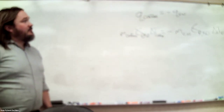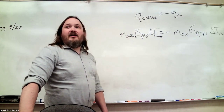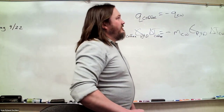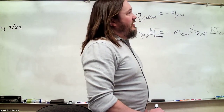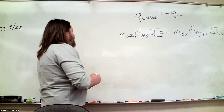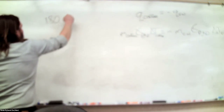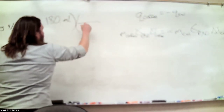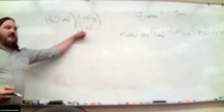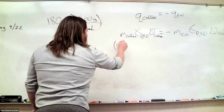We know really everything but the mass of cold water — we just have to pull it from the word problem. We have 180 mL of coffee. The density of coffee in this problem is 1 gram per milliliter, so 180 milliliters gives us 180 grams. That's a nice one-to-one calculation, so the mass of coffee is 180 grams.